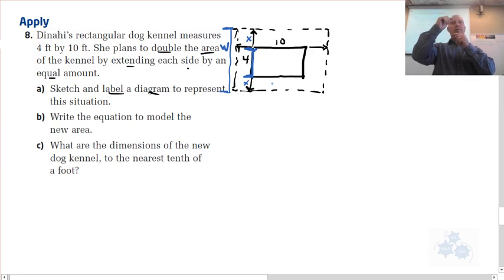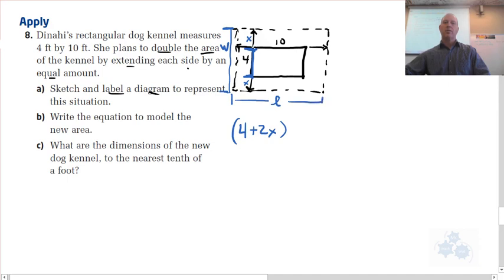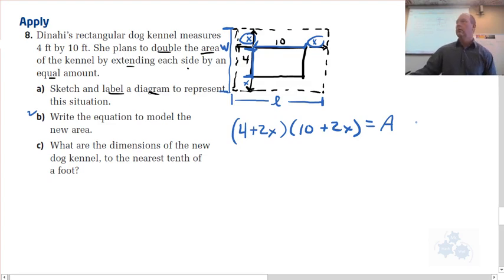The unknown value, that's going to be our variable. So the width is going to be four plus two X. And the area of the larger triangle, also we have to figure out what this length would be. And that's going to be 10 plus two X. So that's B, an equation to model the new area, and that equals area.